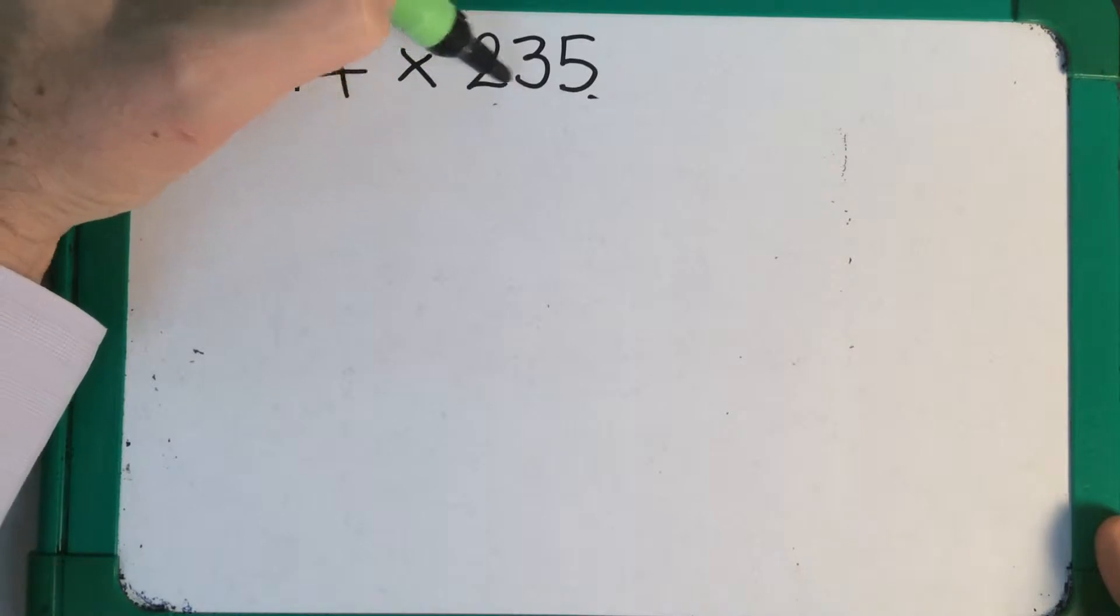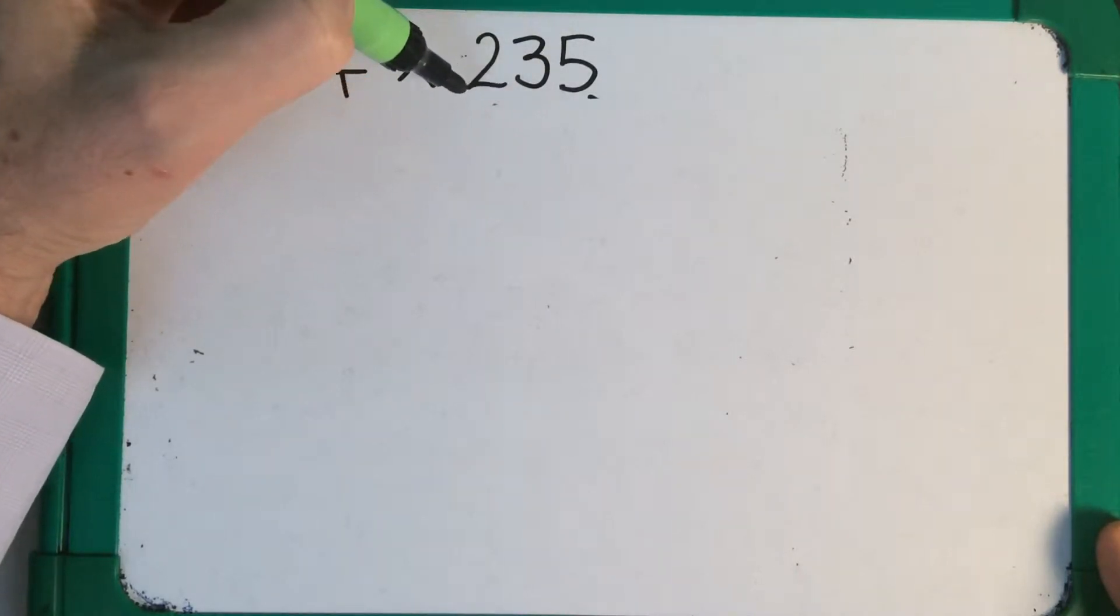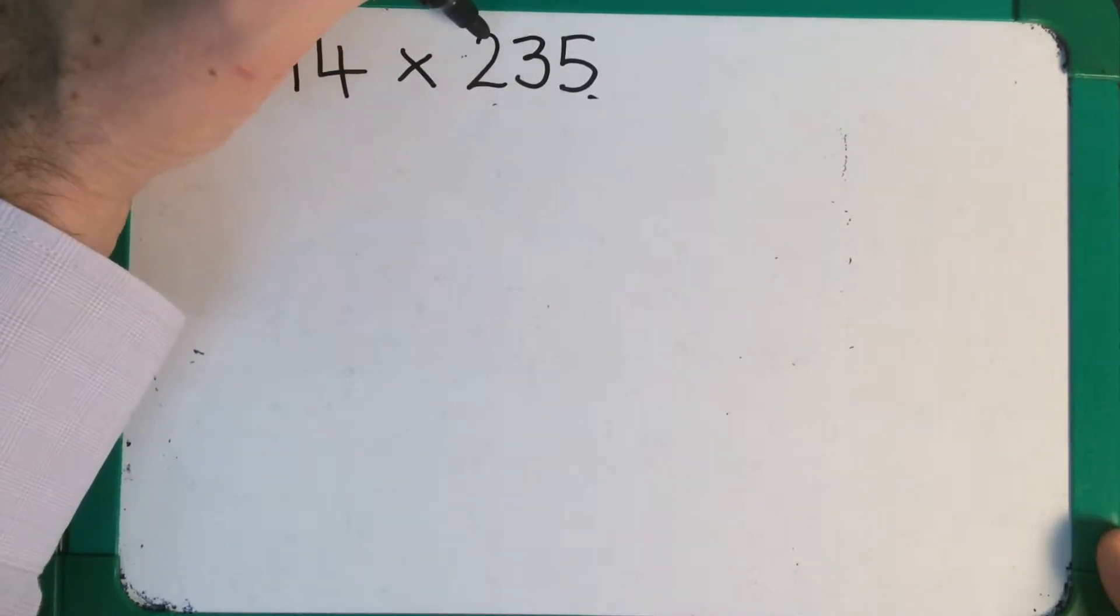First of all, I need to split up this number or partition it into the different pieces. I've got the ones column, the tens column and the hundreds.